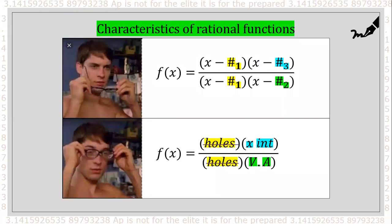Here's a cheat sheet to help you find holes, x-intercepts, and vertical asymptotes. If all factors are in factored form and you have the same factor on top and on bottom — like x plus three over x plus three — those are holes. If you have just a factor in the numerator, that is an x-intercept. And if you have a factor only in the denominator, that is a vertical asymptote.